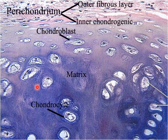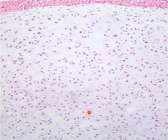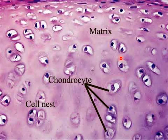Here is a light microscopic picture of hyaline cartilage. We can see the perichondrium formed of outer fibrous and inner chondrogenic layers. The inner chondrogenic gives rise to chondroblasts. Here is the matrix, and here are the chondrocytes. In higher magnification pictures, you can see the matrix, the chondrocytes, the inner chondrogenic layer, chondroblasts, and the cell nest.